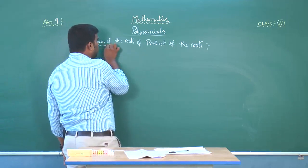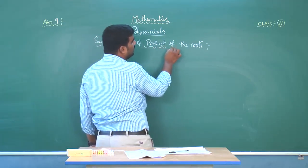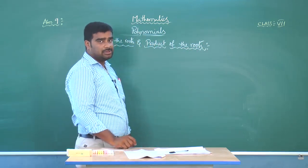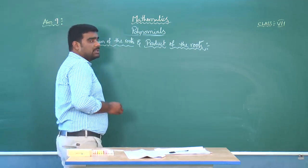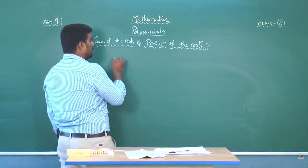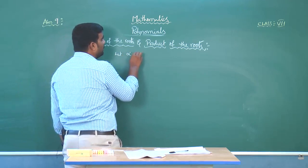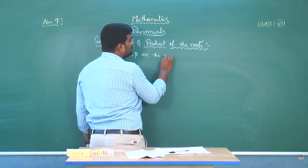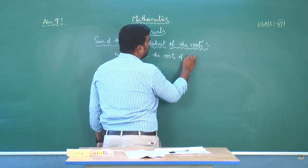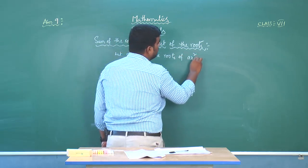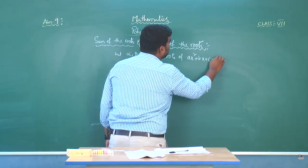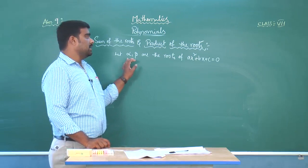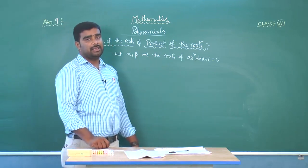When we take a quadratic equation, we know that we will get at most two roots. Let us take the roots as alpha and beta. Let alpha and beta be the roots of Ax² plus Bx plus C equals to 0.